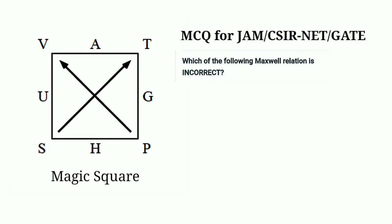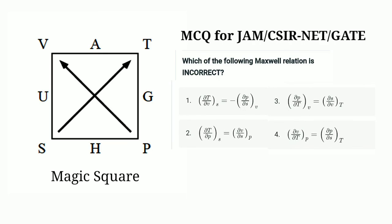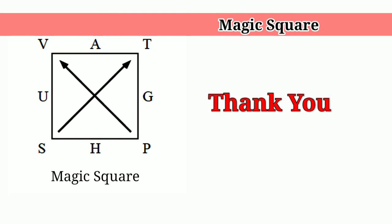Dear students, these are two simple MCQs based on thermodynamic relations which were asked in the CSIR UGC NET examination. There are many such type of questions asked in various competitive examinations, so if you are able to understand the use of this magic square you can easily solve such questions correctly. Please try to use this magic square — it will be very helpful for you. If you have any doubts or suggestions please inform me in the comment box. Thanks for your patience, and if you like this video please subscribe to my channel.